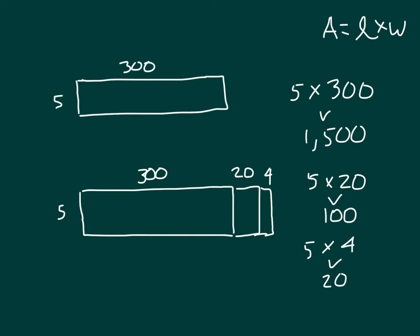If we were to put all those together, it would actually be 5 by what? 5 by 324, or 324 times 5.